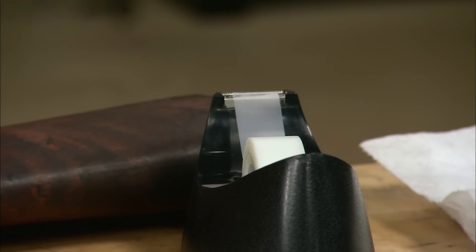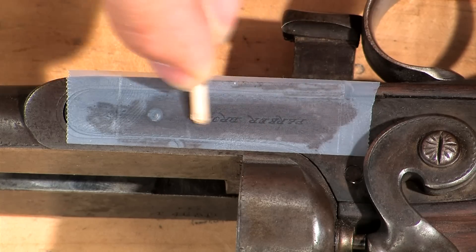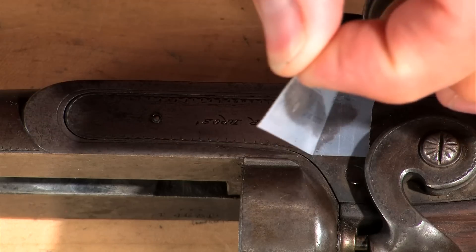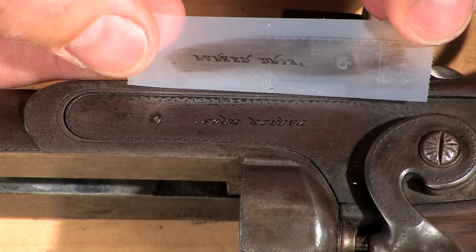Now the pattern can be lifted with a piece of scotch tape and transferred to a second piece of tape to reverse the image.